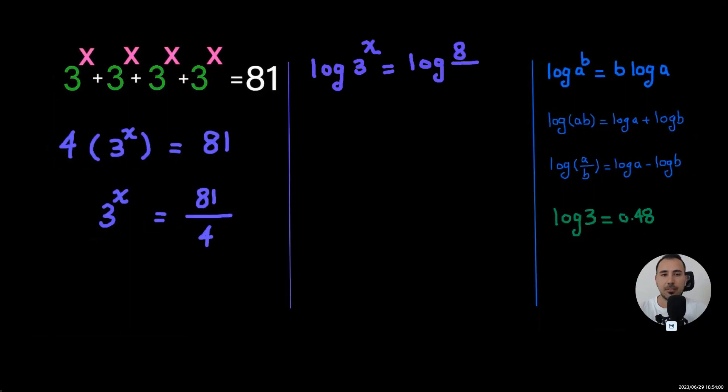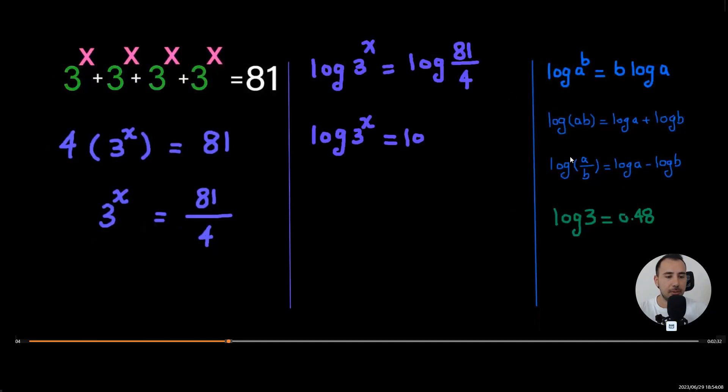So let's take logs from both sides. And now here, you can see we're going to use this logarithm rule. We're going to write it as log a minus log b. In this case, it's going to be log 81 minus log 4.